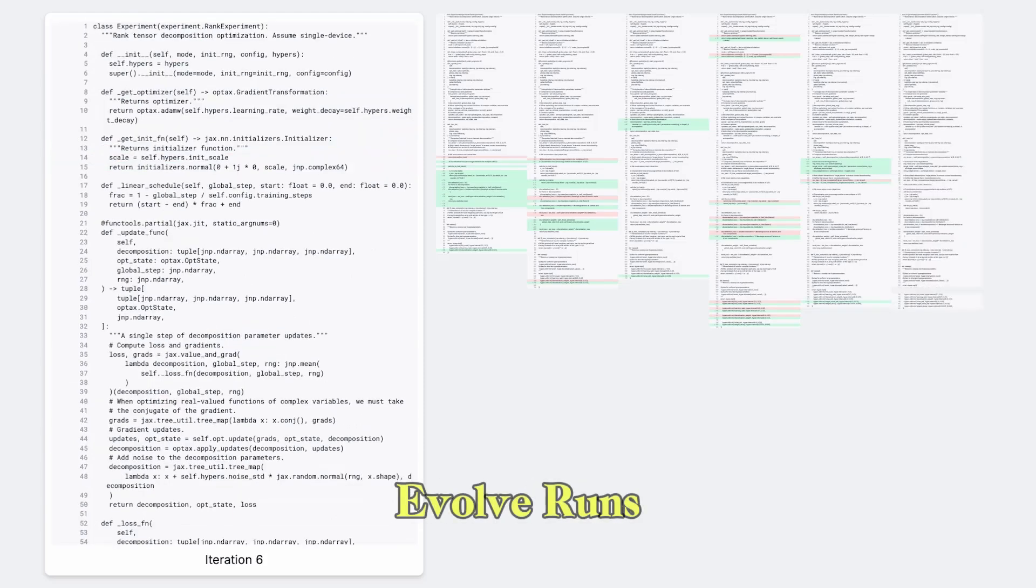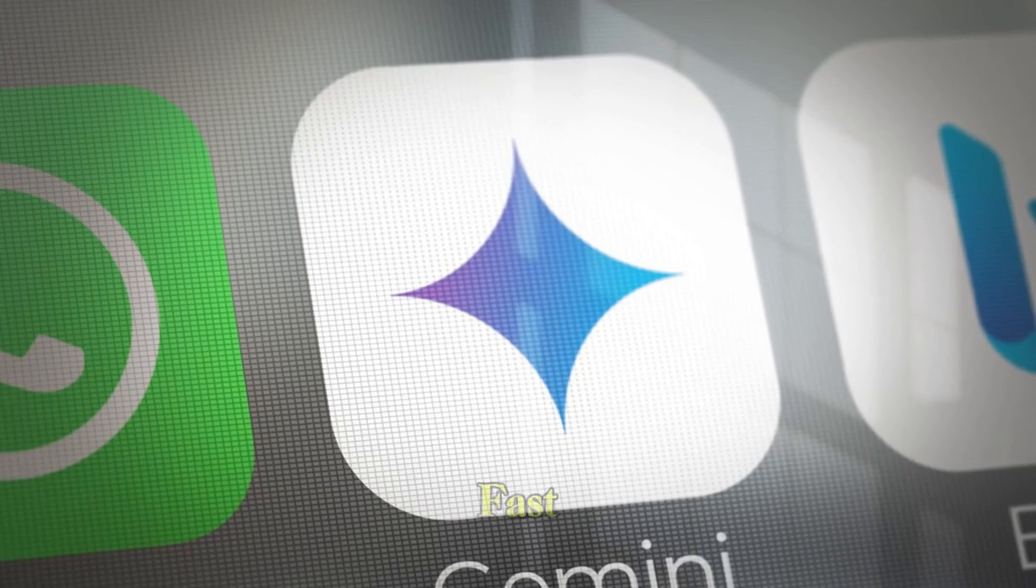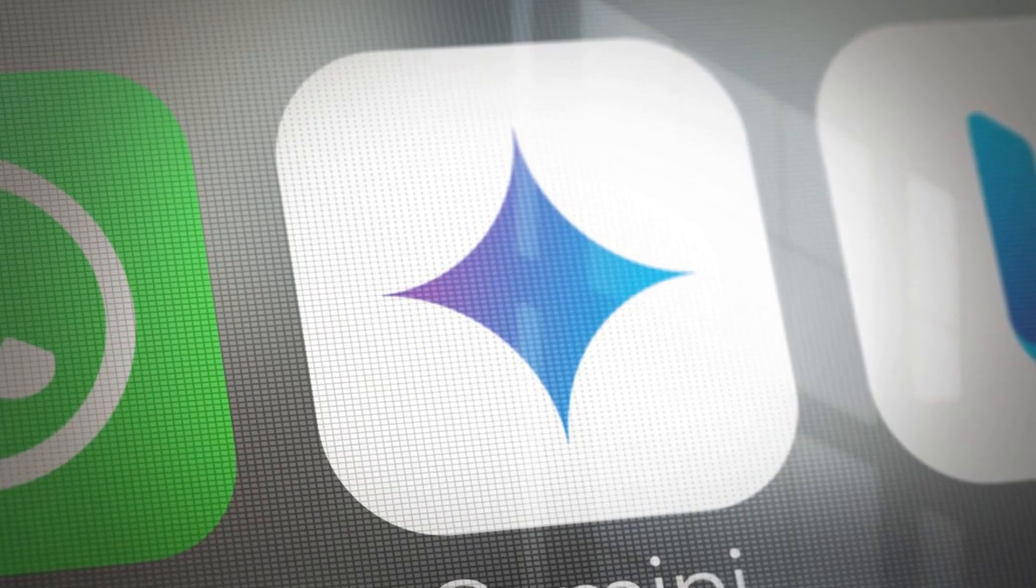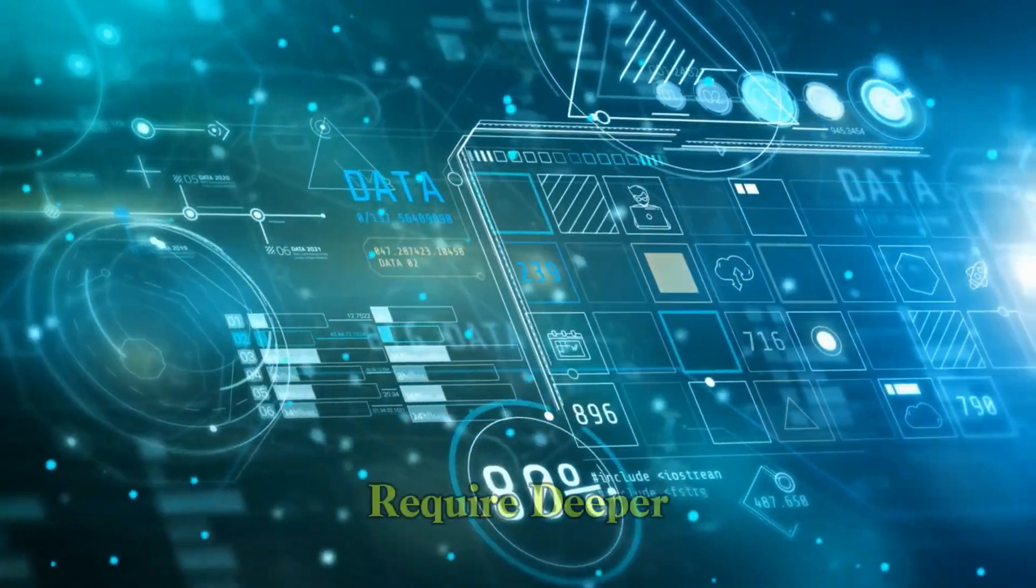At its core, AlphaEvolve runs on two versions of Gemini. Gemini Flash: fast, lightweight, ideal for generating thousands of algorithm candidates quickly. Gemini Pro: slower, but more capable and used when problems require deeper reasoning.